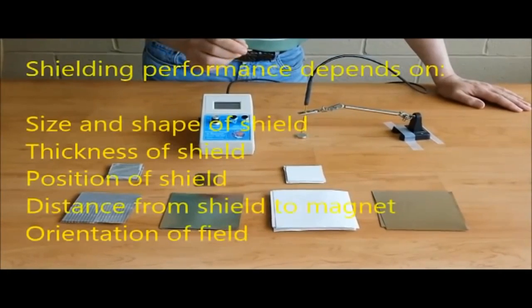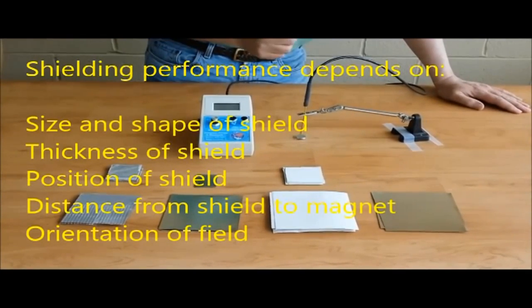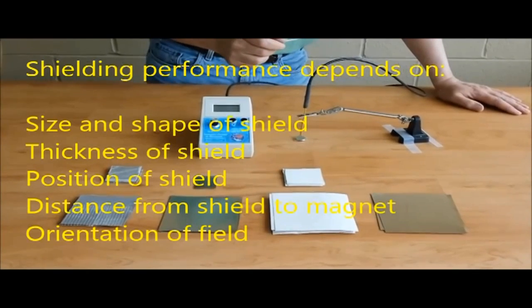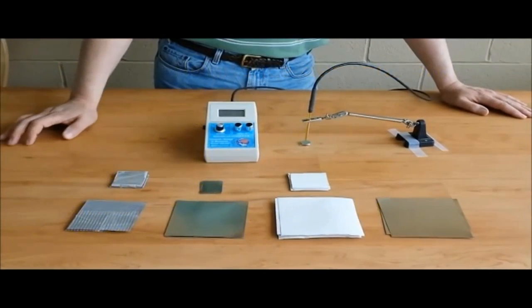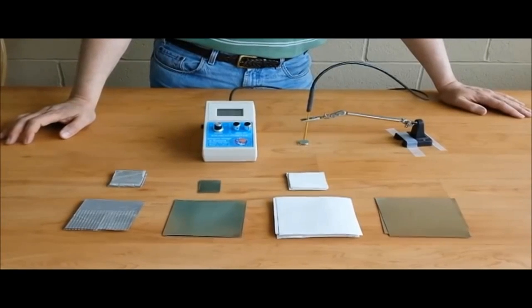Thickness, shape, size, and position of the shield also play important roles in shielding effectiveness. Thickness also affects your ability to cut and shape the material.